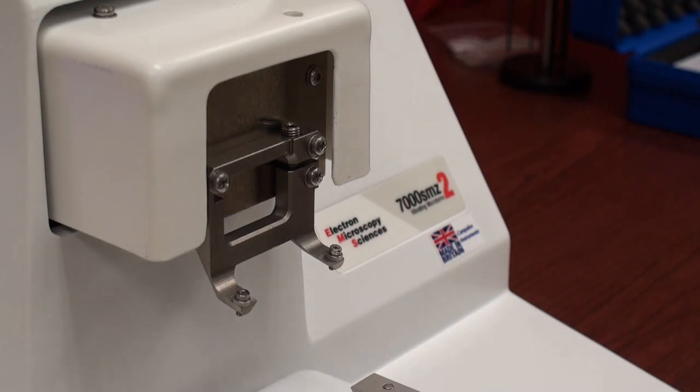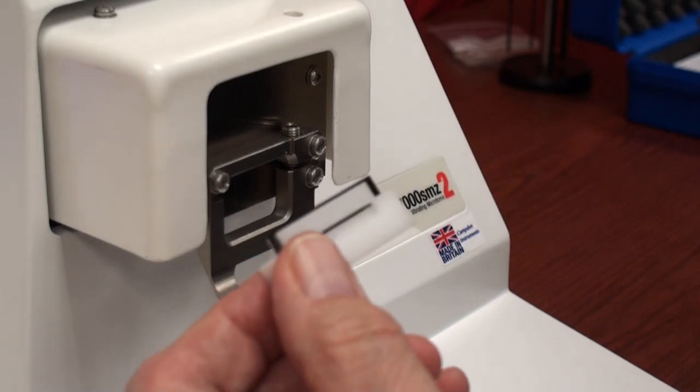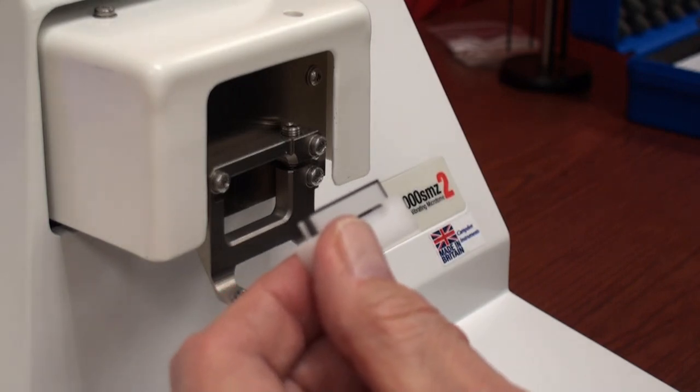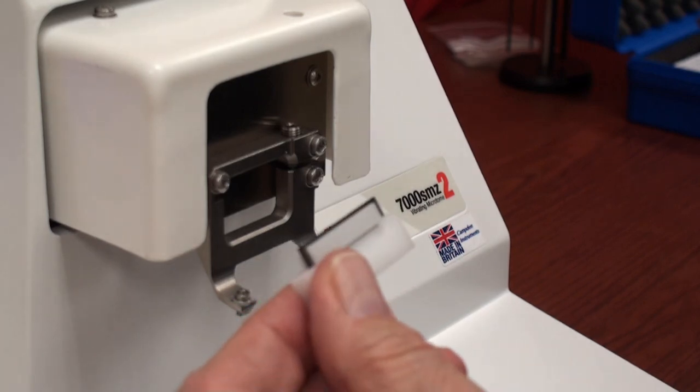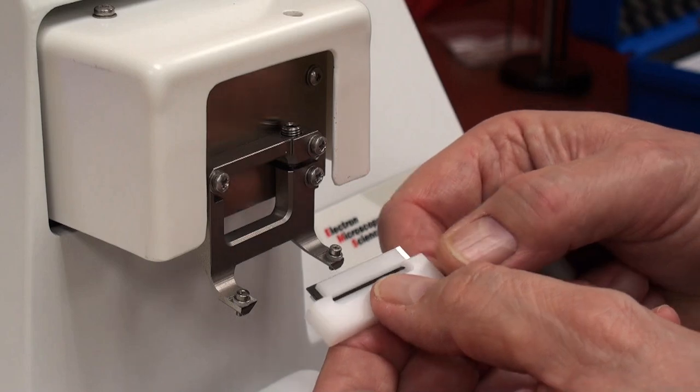Now I'd like to show you how to install a knife in the Tissue Slicer, the 7000SMZ2. Here you see one of the ceramic blades in its protective holder, which prevents you from cutting yourself, which usually will generate some paperwork and some embarrassment.